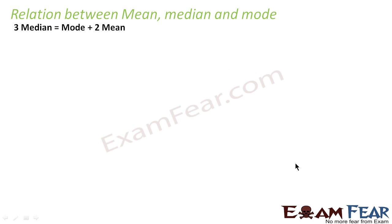Let me introduce an empirical relation. This is an empirical relation between mean, mode, and median. The relation is 3 times median equals mode plus 2 times mean.